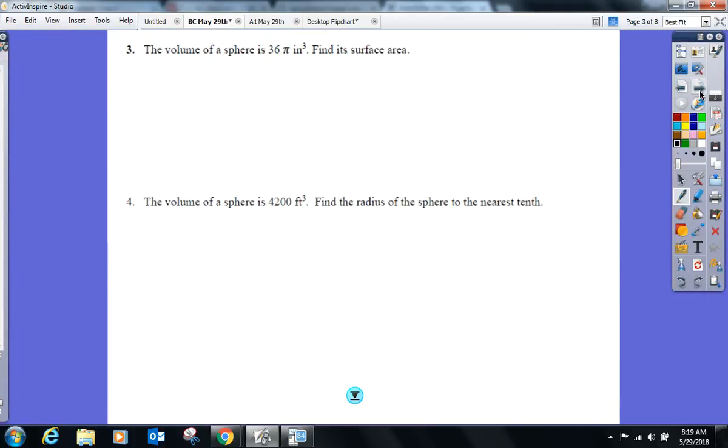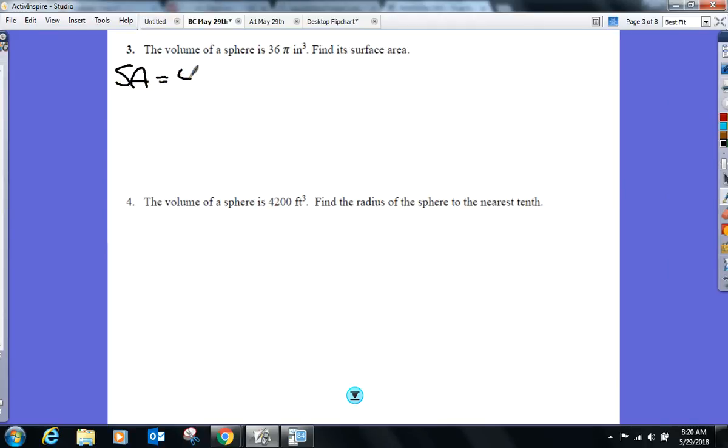Here we go. Volume, 36 pi inches cubed. Find the surface area. Let's go back. Surface area formula. 4 pi r squared. What's the only value you guys need? Radius. Can I get that from the volume? Let's talk. Volume was 4 thirds pi r cubed. Volume 36 pi. You guys said you need the radius to solve for surface area. Help me solve for the radius now.